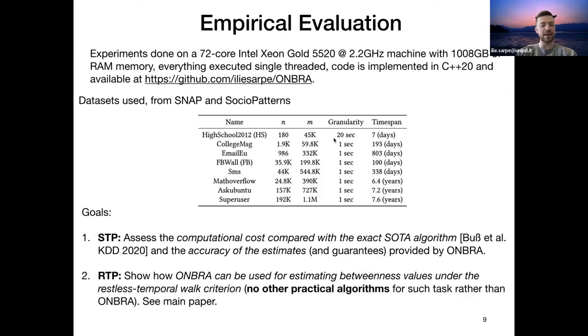We performed an extensive experimental evaluation by using moderately large data sets. And in particular, our goals were two. The first one was to, on the shortest criteria, assess the computational cost compared to the exact algorithm and the accuracy of the estimates and guarantees provided by ONBRA. And on the RTP criteria, since no exact algorithm, for what we know, exists, or at least practical implemented, to show that we can use ONBRA to analyze temporal networks under such criteria.